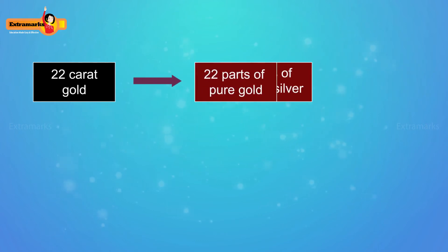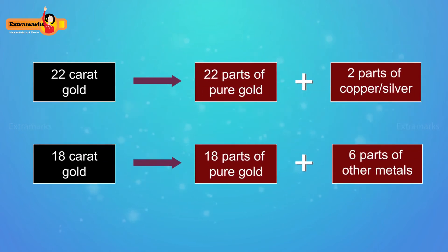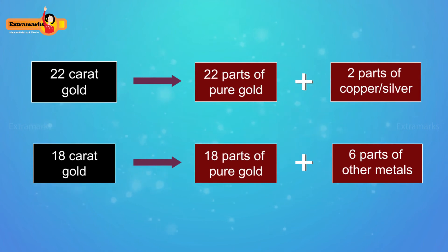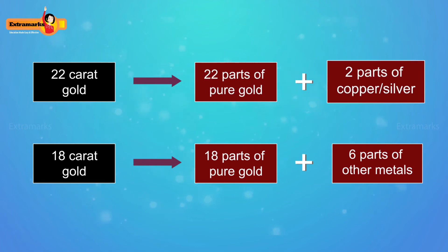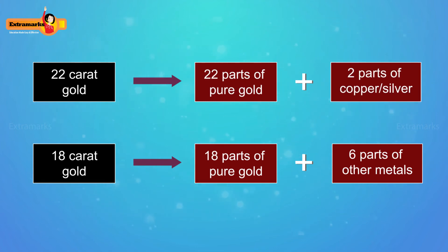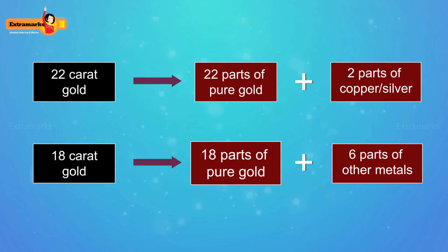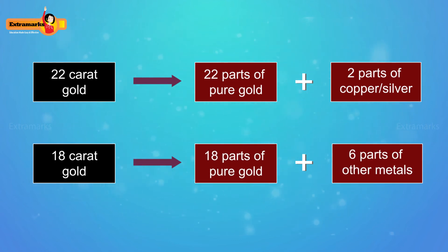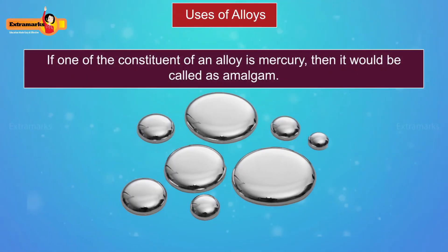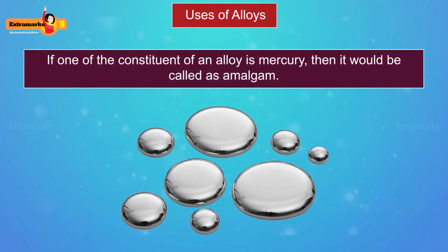Usually 22 karat and 18 karat gold are used for making ornaments. 22 karat gold has 22 parts of pure gold and 2 parts of either copper or silver, whereas 18 karat gold has 18 parts of pure gold and 6 parts of other metals, often copper or silver.